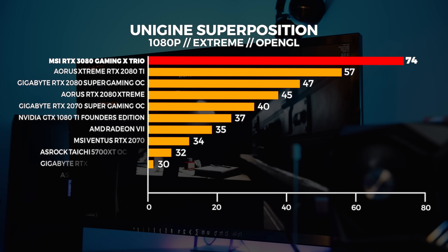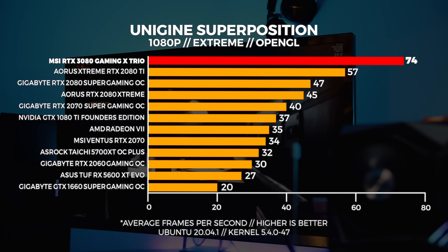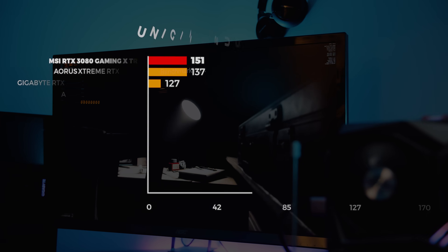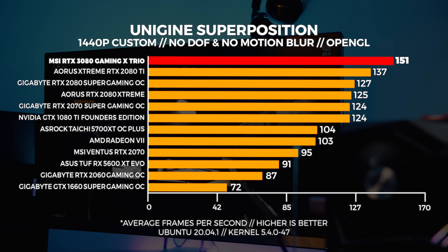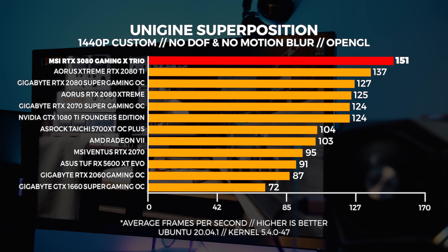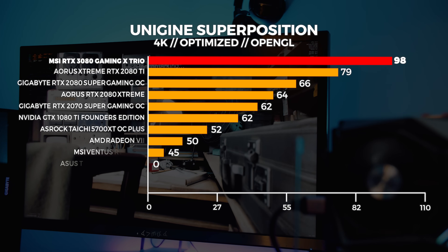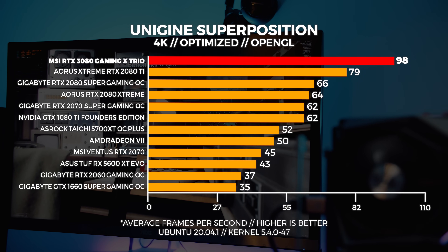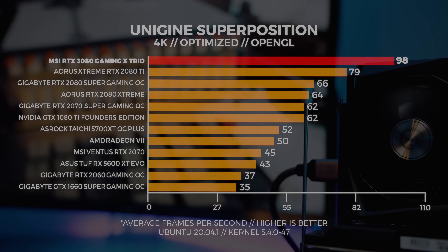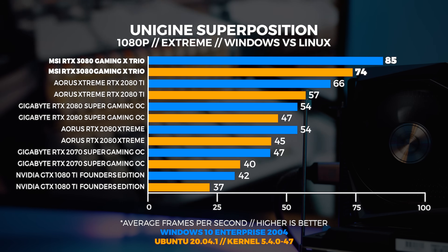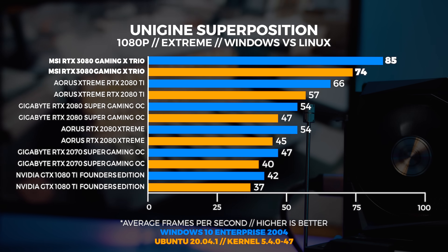Let's move on to Unigine Superposition. For Superposition we perform three tests in total: we use the 4K optimized preset, the 1080p extreme preset, and our own custom 1440p preset with depth of field and motion blur turned off. Superposition is a pretty good benchmark if you want to get a good idea of the performance of your own system because it's free, so you can compare your own systems to ours. The Superposition benchmark is a bit lackluster in Linux since it uses OpenGL and not Vulkan, but it does give you an indication of OpenGL performance — OpenGL has its own inherent limitations which we could do a whole video about on its own.